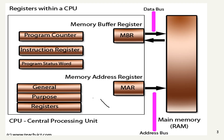As you can see, this is a picture of the registers within a CPU. A CPU typically contains several types of registers used for different purposes. These are some of the most common registers found within the CPU. The first one is the program counter, which is a register that holds the memory address of the next instruction to be executed.